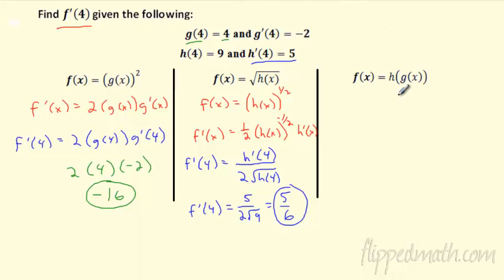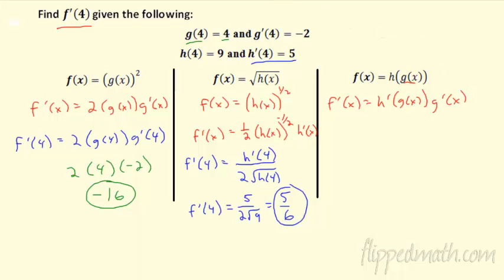One more and we are done — let's wrap this up. This is the definition of the chain rule. f' equals: g(x) is inside h(x), so I take the derivative of the outside function, giving h'(g(x)), leaving the inside alone, then multiplying by the derivative of the inside, g'(x). When I plug in 4: h'(g(4)) times g'(4).